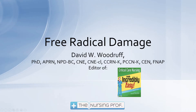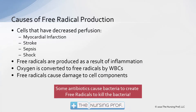Let's talk a little bit about free radicals. What causes free radicals to be produced in the body? It's a number of different things — usually cells that have decreased perfusion, such as what happens with a myocardial infarction, a stroke, sepsis, or anyone having any form of shock. Free radicals are produced as a result of the inflammatory process, and they're produced by our white blood cells.